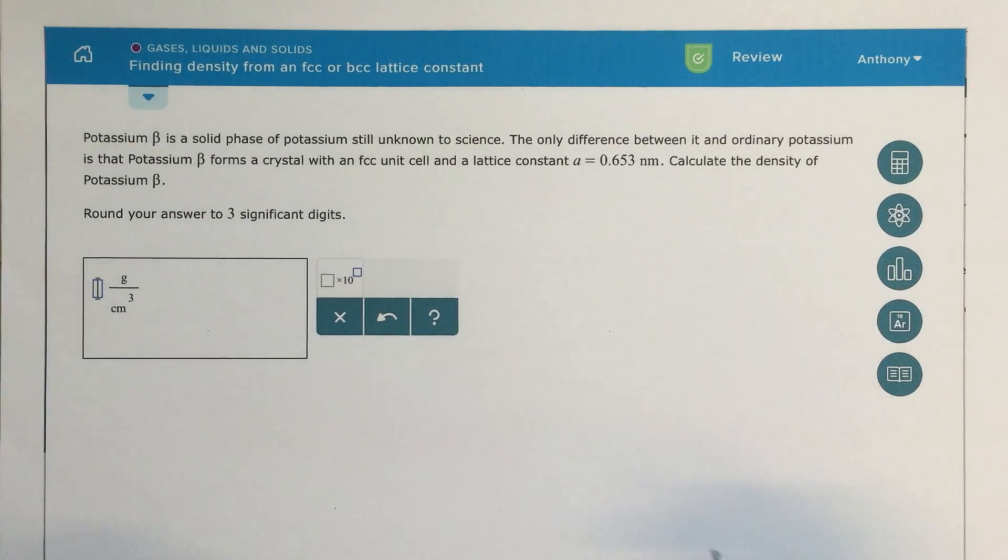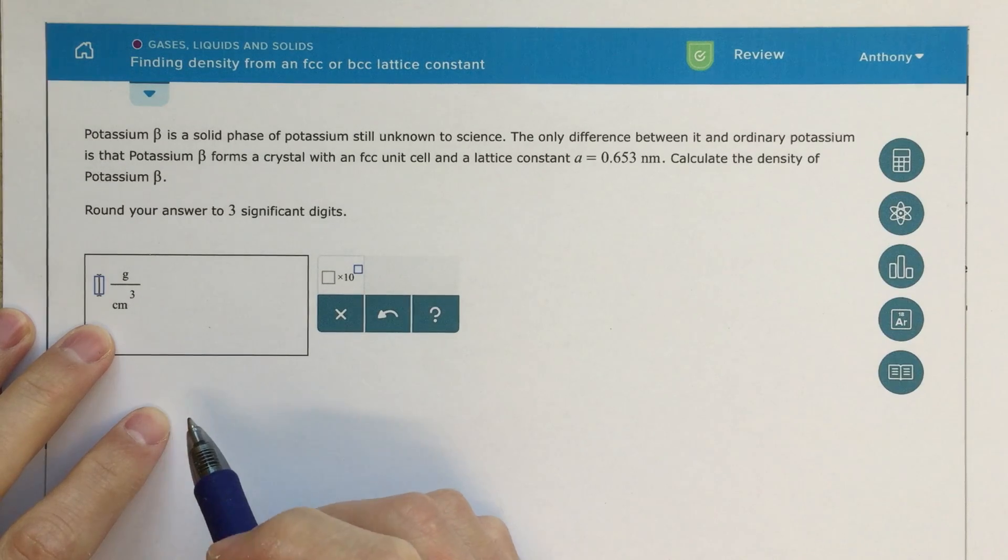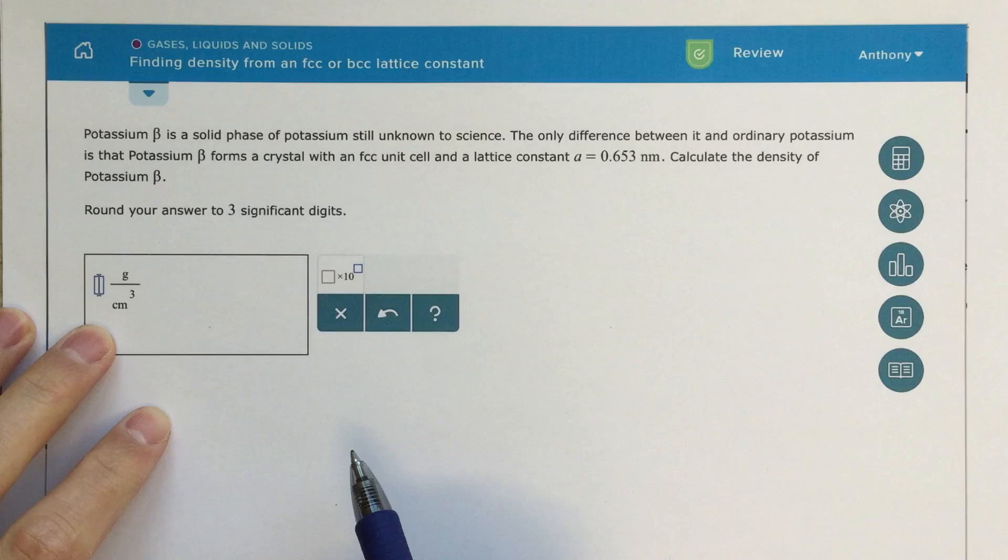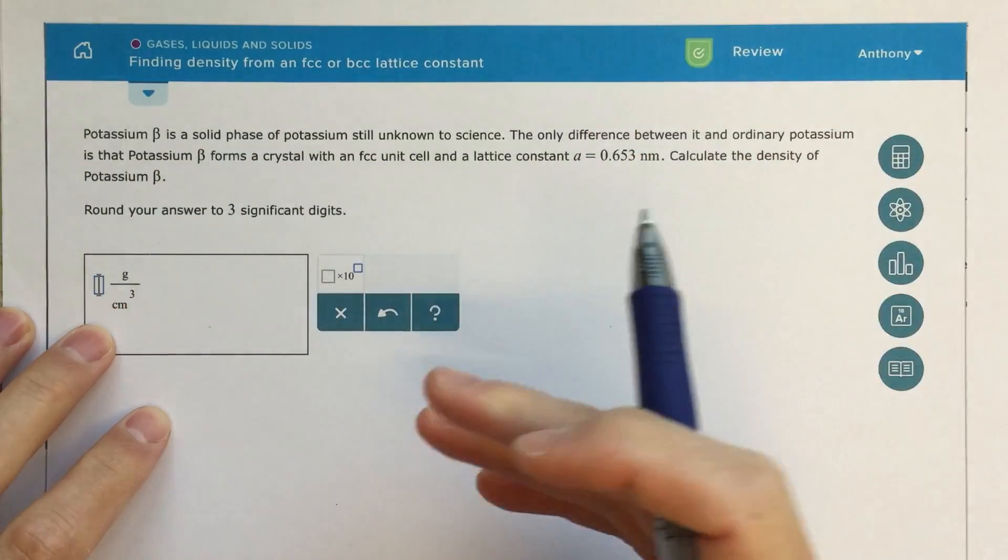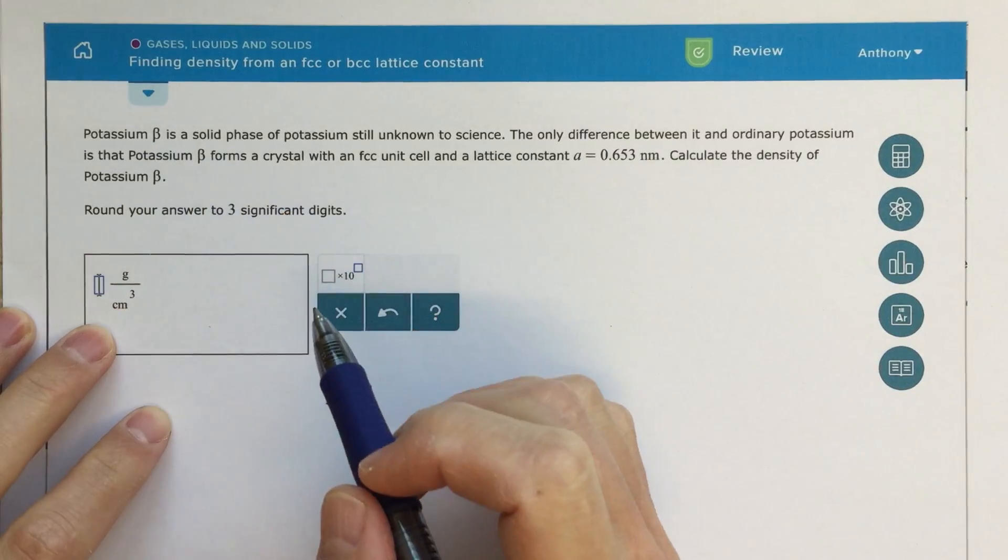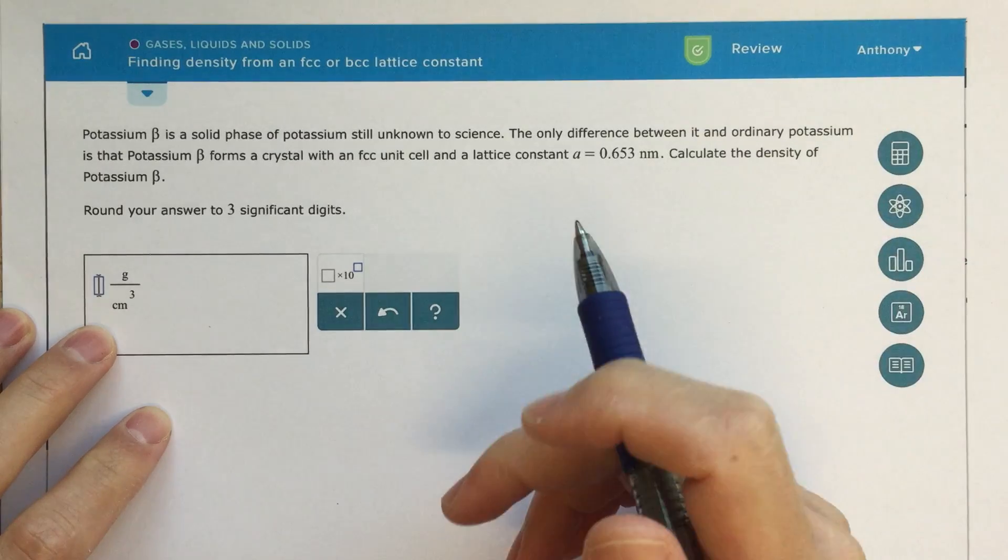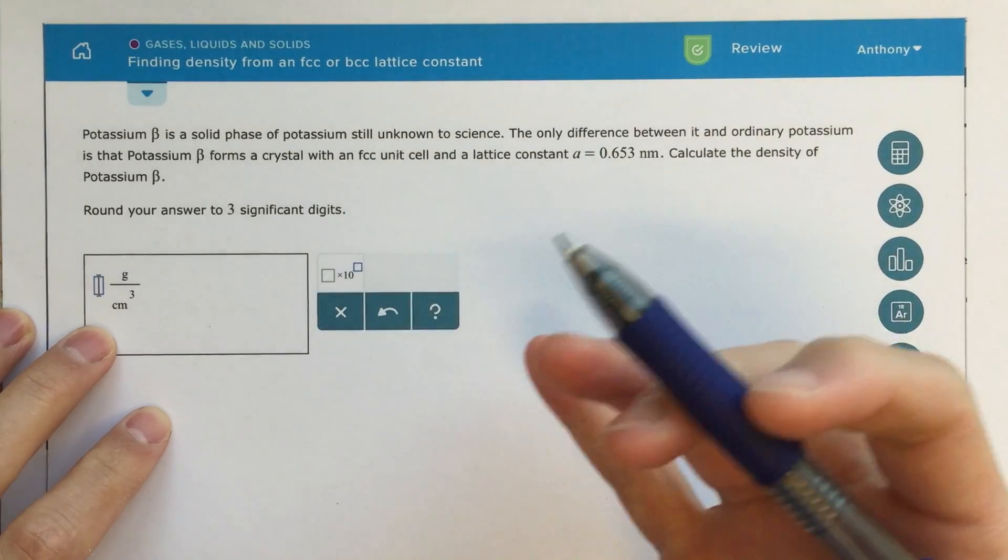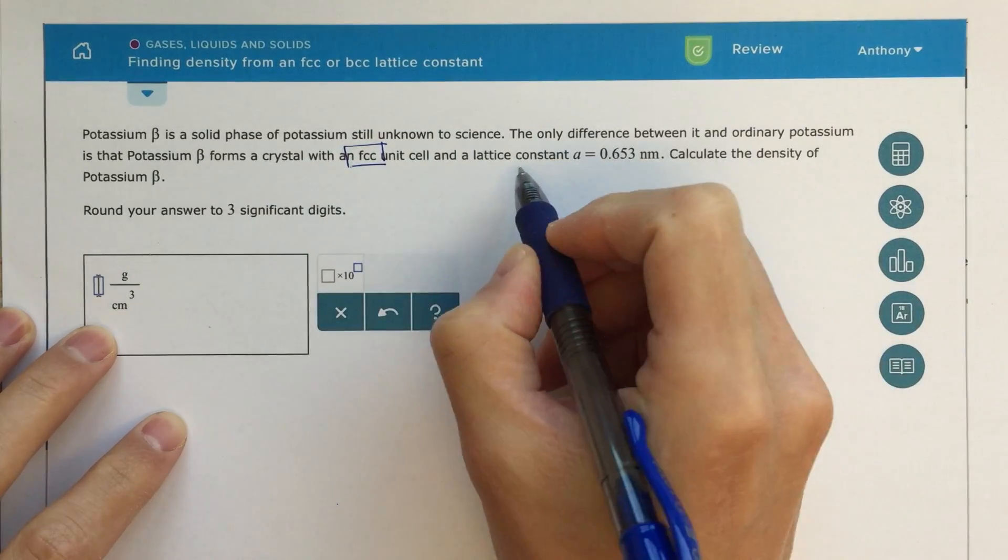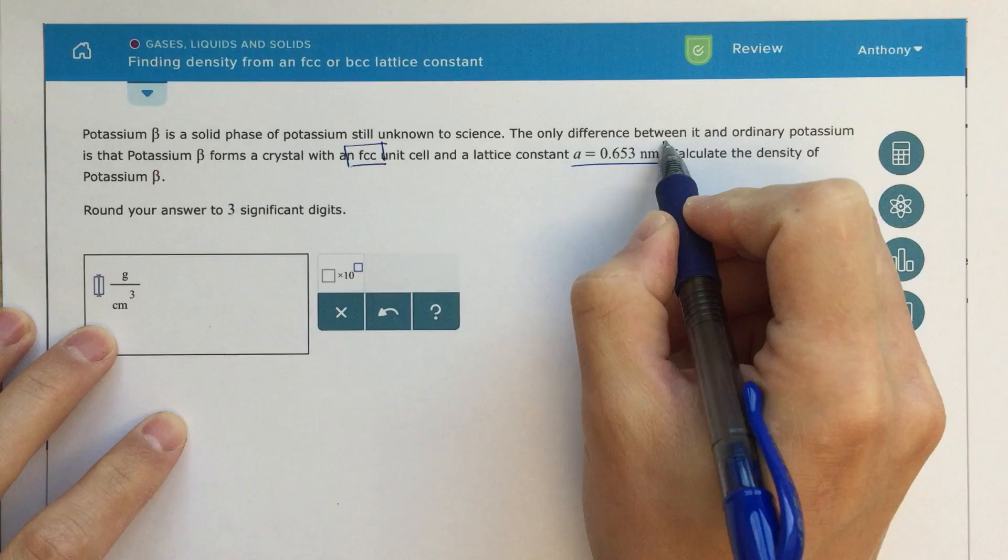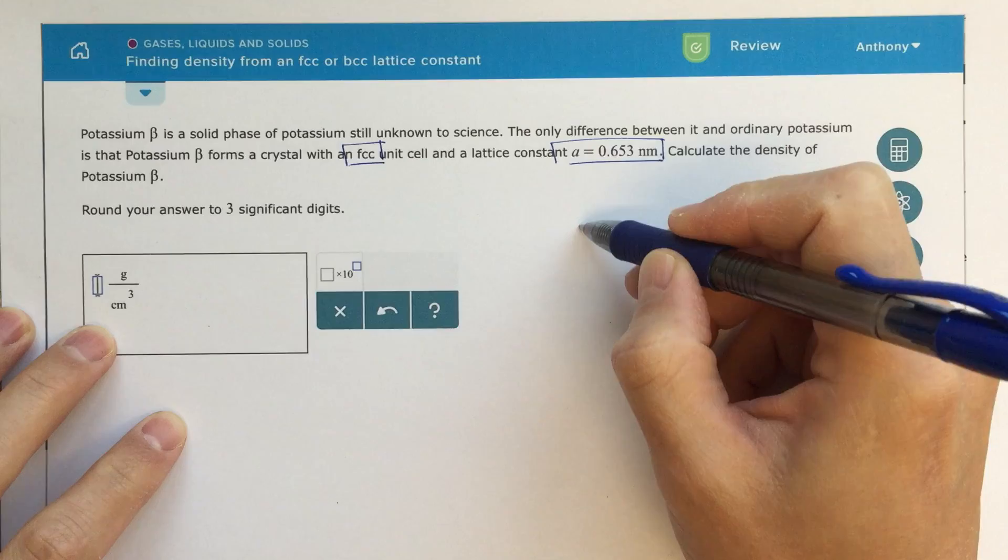In this problem, we're looking for density, so my final answer is going to be grams per centimeter cubed. I'm given that we have potassium. Potassium beta is a solid phase of potassium, still unknown to science. This whole beta thing is just describing a different form of potassium, you don't need to worry too much about that. The only other important information here is that we've got a face-centered cubic unit cell, and then our lattice constant, this alpha value, is the edge length essentially. When I see this, I'm going to be thinking about drawing a little cube.